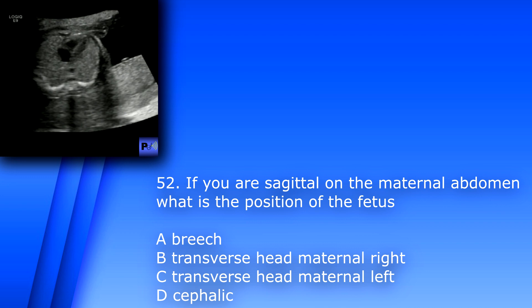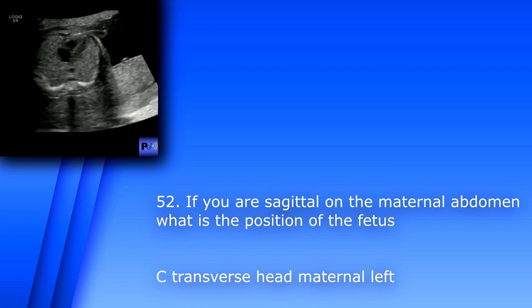Question 52. If you are sagittal on the maternal abdomen, what is the position of the fetus? A. Breech, B. Transverse head maternal right, C. Transverse head maternal left, D. Cephalic. Off the bat, you know this baby is transverse, so A and D are not your answer. The fetal heart points to the left, so above this would be the head and below would be the feet. The answer is transverse head maternal left.